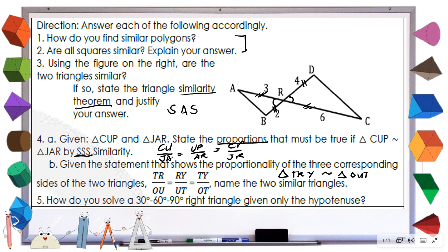For number five, how do you solve a 30-60-90 right triangle given only the hypotenuse? Remember, the hypotenuse is twice the shorter leg. So if you are given the hypotenuse, divide it by 2 to get the shorter leg. Then, to find the longer leg, multiply the computed shorter leg by square root of 3. That completes the 30-60-90 triangle.